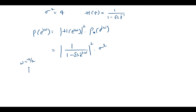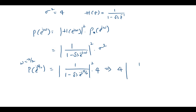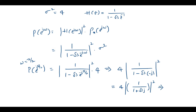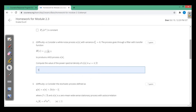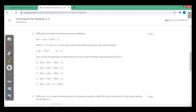At ω = π/2, we compute P(e^(jπ/2)) = 4 · |1 / (1 − √3·e^(−jπ/2))|². Since e^(−jπ/2) = −j, this becomes 4 · |1 / (1 + √3·j)|². After simplification, the answer is 1.